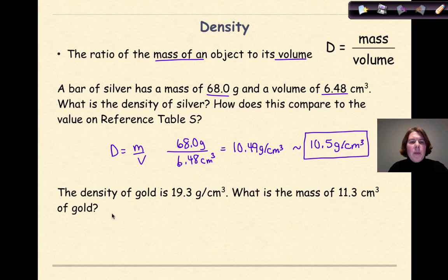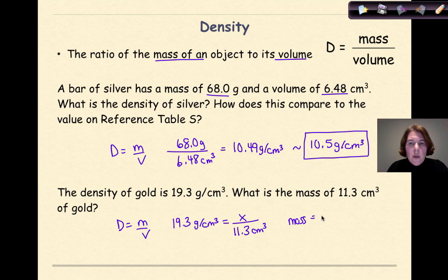Let's look at one more practice problem. The density of gold is 19.3 grams per centimeters cubed. What is the mass of 11.3 centimeters cubed of gold? So I'm going to write up my formula first. Density is equal to mass over volume. They're giving me density, so 19.3 grams per centimeters cubed equals, we're looking for mass, so that's my x. I'm going to put that over my volume, which is 11.3 centimeters cubed. I'm going to cross multiply here. And when I cross multiply and I solve for the mass, the mass here is going to equal 218 grams. And that works out nicely for us because this has three significant figures, and this has three significant figures.